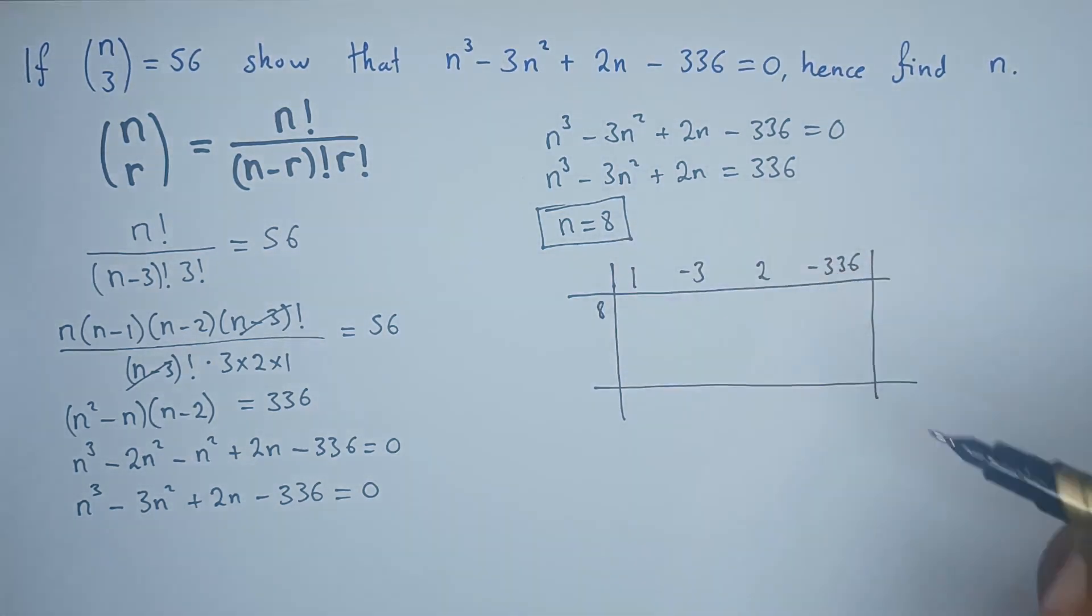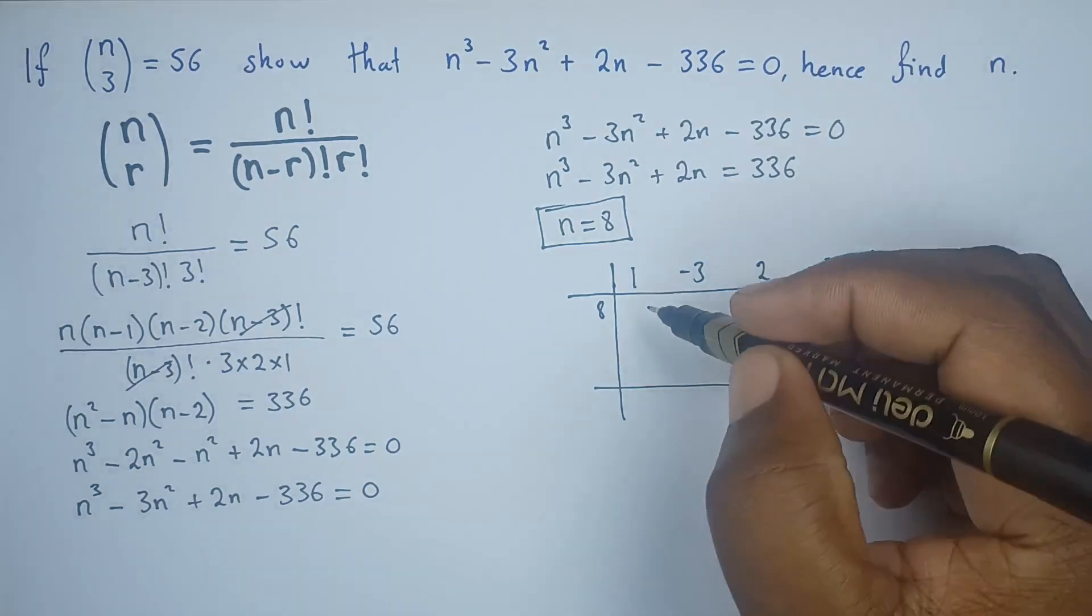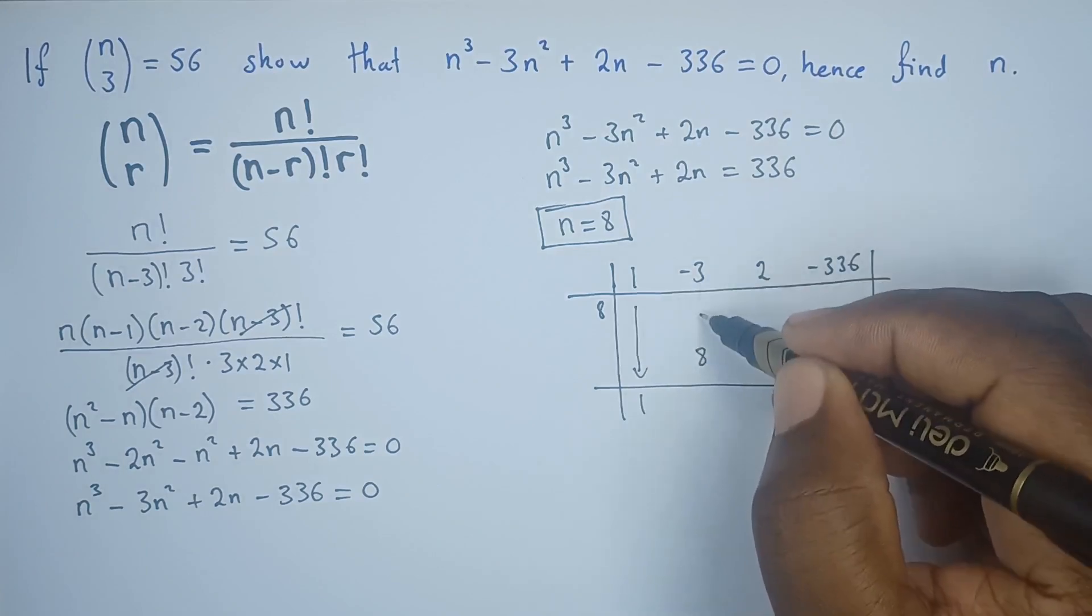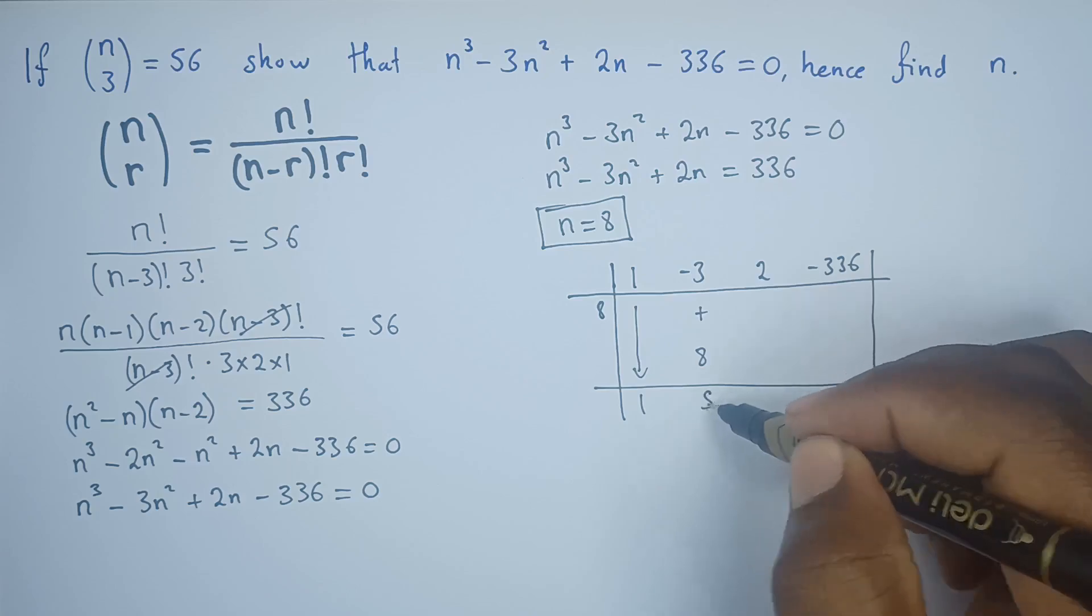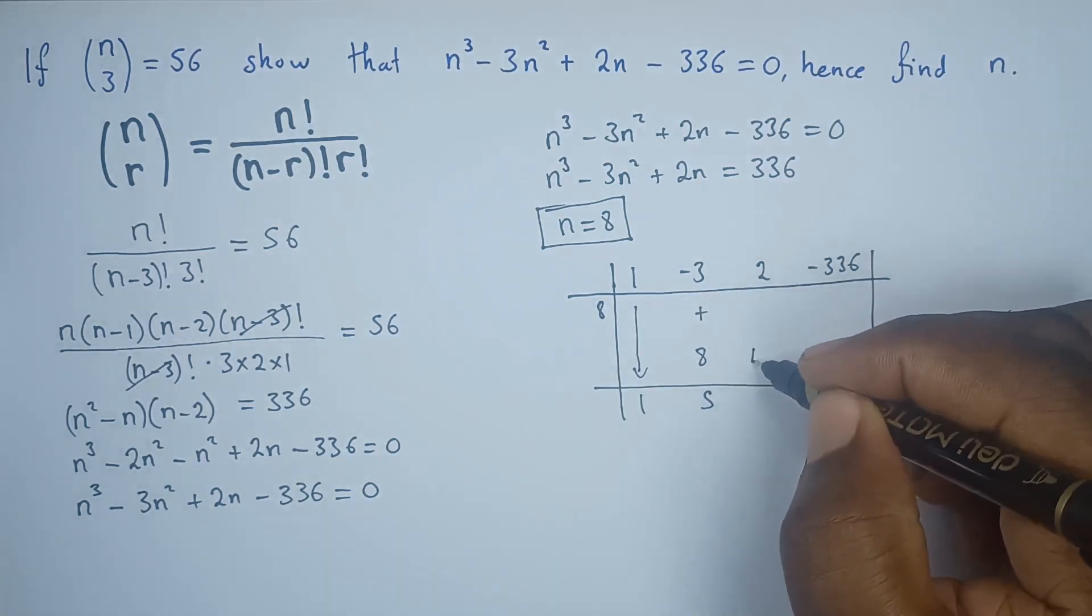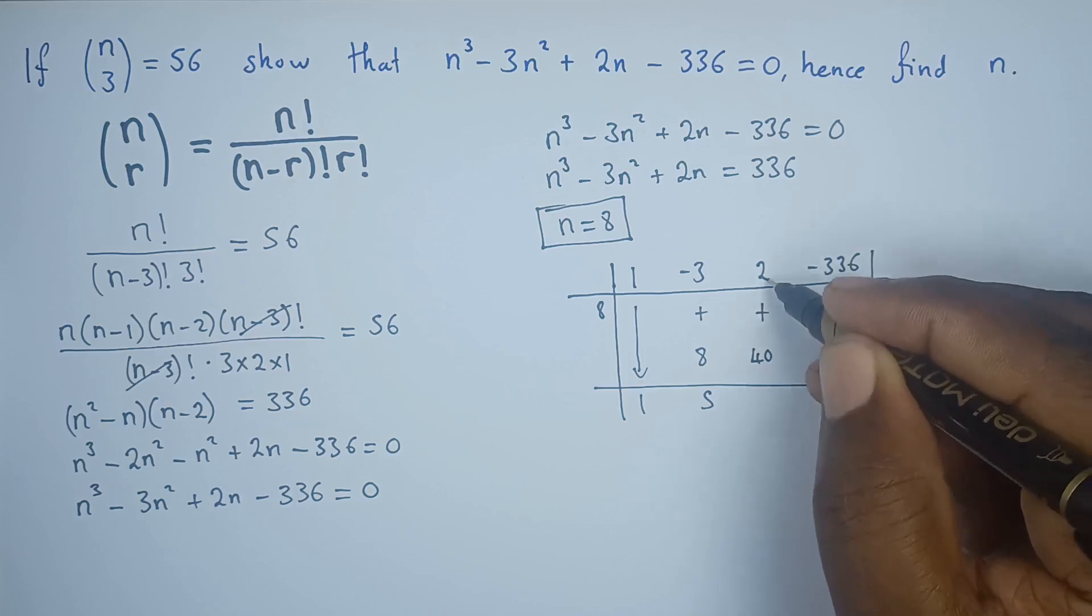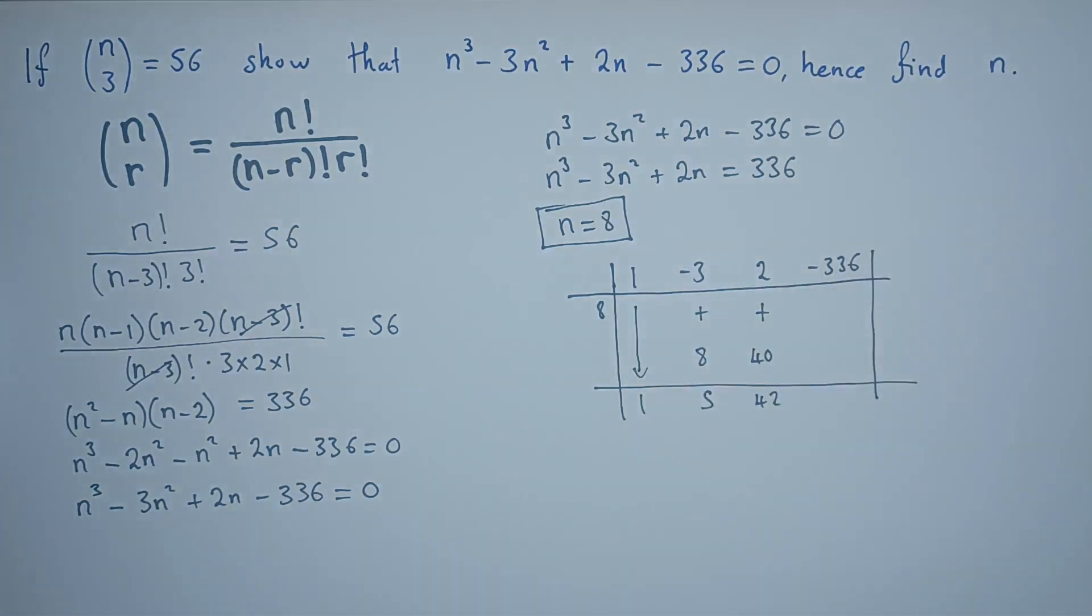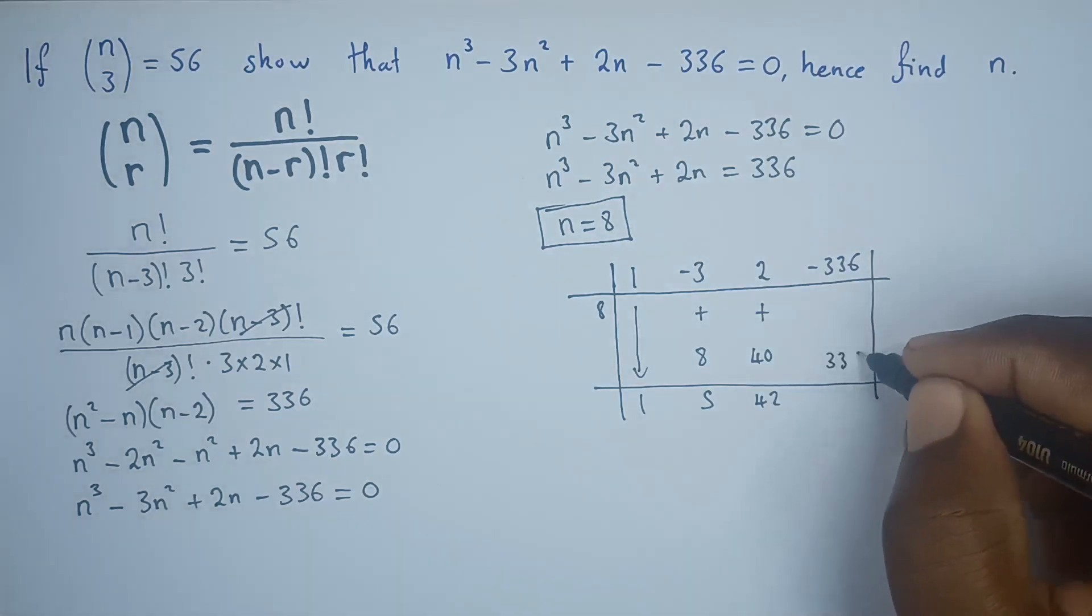We drop the 1 here. 1 times 8 is 8. We add these two, we get 5. 5 times 8 would be 40. We add these two, we get 42. Then 8 times 42, what do we get? 336. We add here, we get 0.